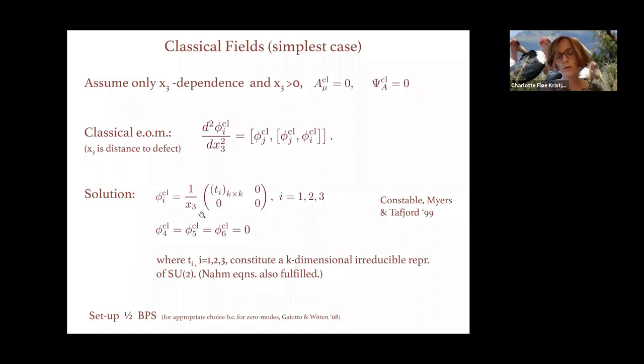It's easy to show that for such matrices, this equation is fulfilled. This solution is also known as a Nahm pole — it fulfills the Nahm equations and ensures that the setup is half-BPS.